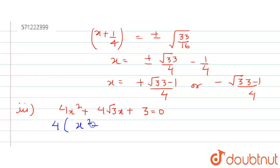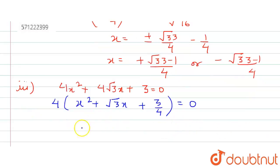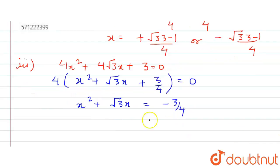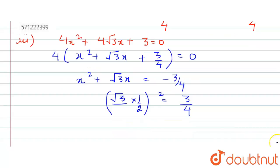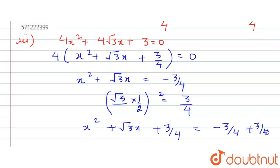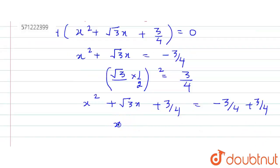After taking out 4, we are left with x² plus √3 x plus 3/4 equals 0, giving x² plus √3 x equals minus 3/4. To complete the square, take the coefficient of x, which is √3, multiply by half and square it, giving 3/4. Adding 3/4 to both sides: x² plus √3 x plus 3/4 equals minus 3/4 plus 3/4.